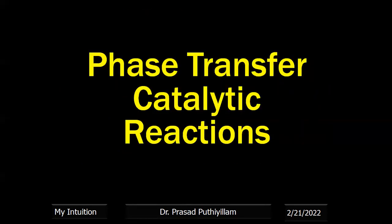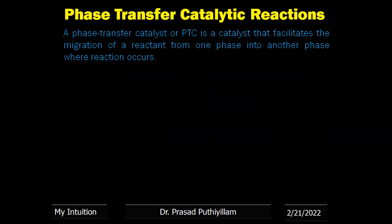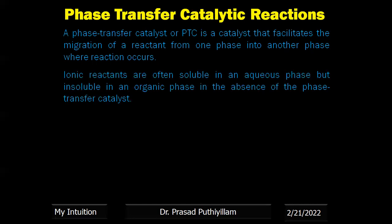The third topic is phase transfer catalytic reactions. A phase transfer catalyst, or PTC, is a catalyst that improves the migration of a reactant from one phase into another phase to enable the reaction. In some chemical reactions, we use both hydrophilic and hydrophobic reagents — two different phases — making the reaction difficult without demanding higher temperature or pressure. Ionic reactants are always soluble in the aqueous phase but insoluble in the organic phase in the absence of a phase transfer catalyst.